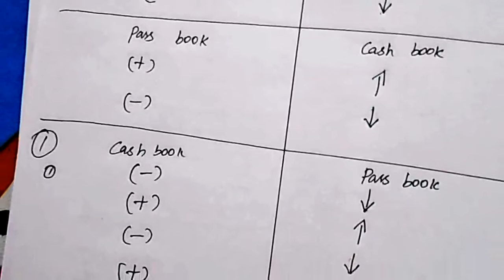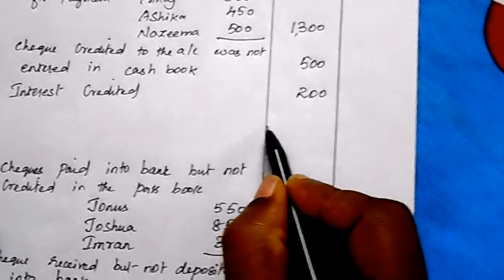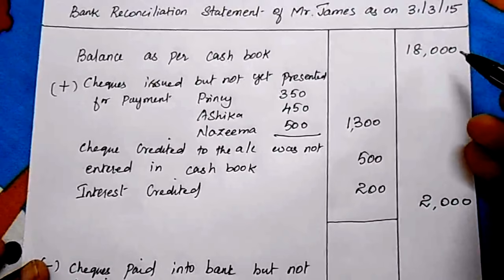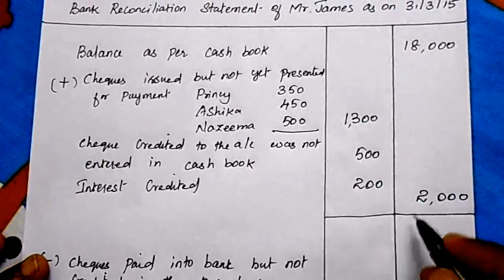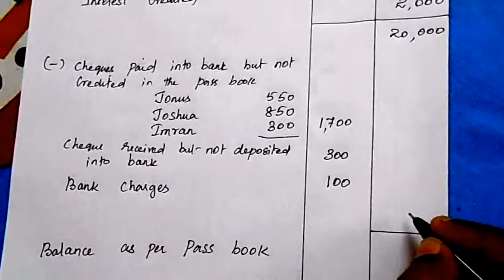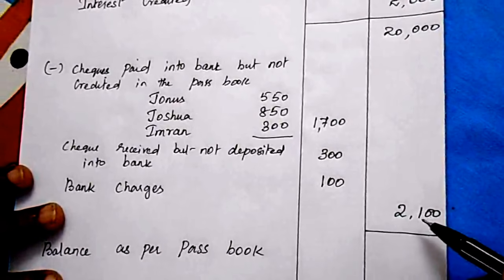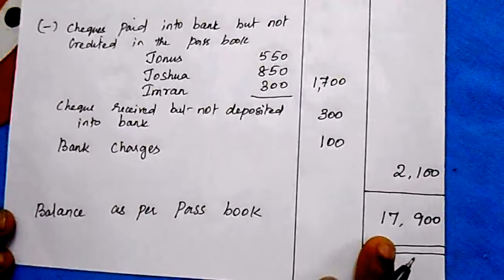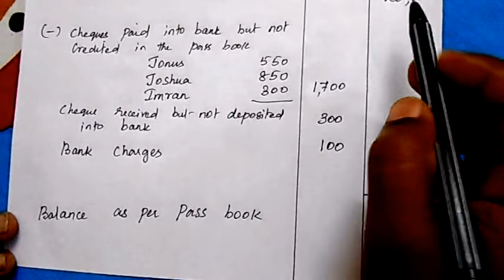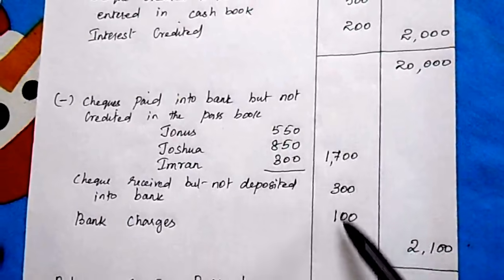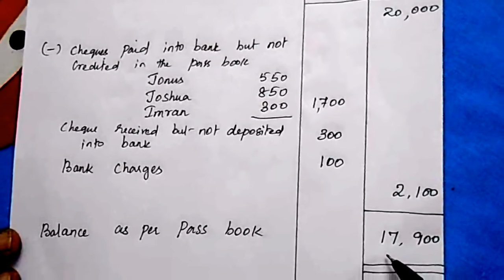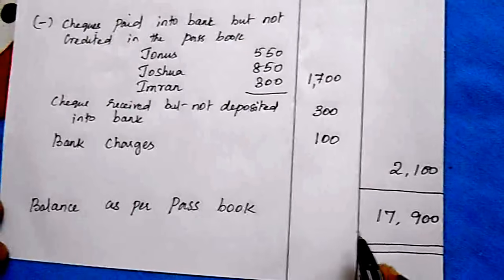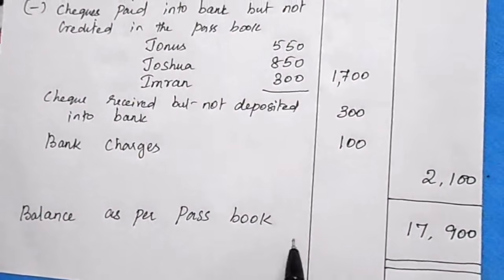All transactions have been entered per the logic. Taking the total: cash book balance Rs. 18,000, add Rs. 2,000 = Rs. 20,000, minus Rs. 2,100 = Rs. 17,900. This is the balance as per pass book — a favorable balance. If the result were negative, the pass book balance would be an overdraft.